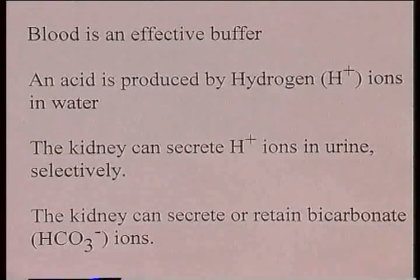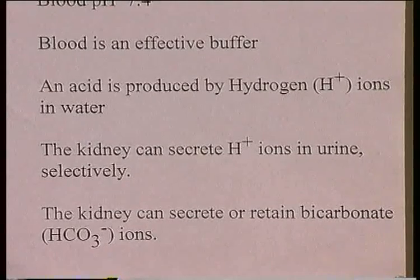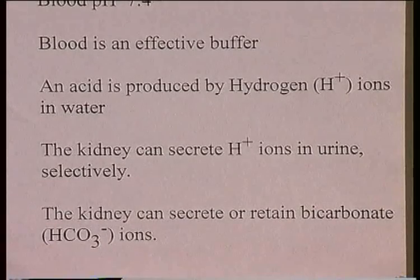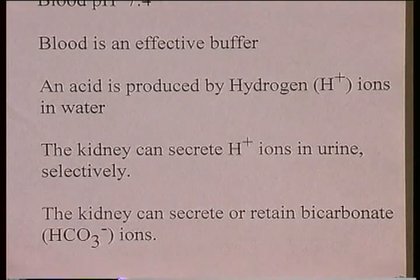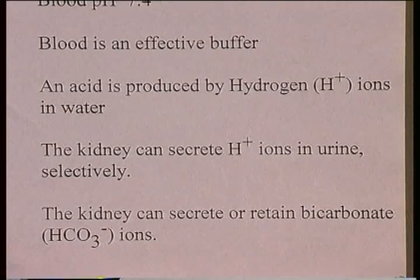The kidney can also secrete or retain bicarbonate — the HCO3 minus ion — excreting those selectively. If more of these are retained, pH will increase above 7.4. The more bicarbonate ions are retained, the more alkaline the blood will be. The less bicarbonate ions that are retained, the more acidic the blood will be. So acid-base balance is homeostatically maintained by the kidney.